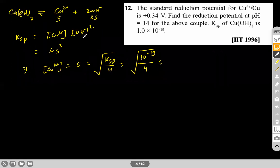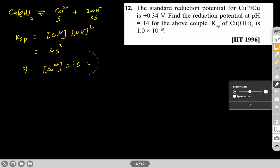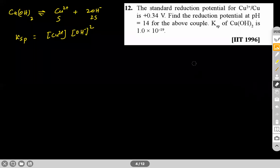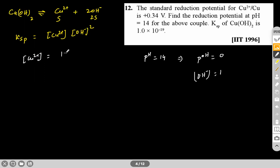Since pH = 14, pOH = 0, so [OH⁻] = 1 M. We substitute this into the Ksp expression: Ksp = [Cu²⁺] × (1)² = [Cu²⁺]. Therefore [Cu²⁺] = 10⁻¹⁹ M. Now we apply the Nernst equation for Cu²⁺/Cu: E = E⁰ − (0.0591/2) × log(1/[Cu²⁺]) = 0.34 − (0.0591/2) × log(10¹⁹).